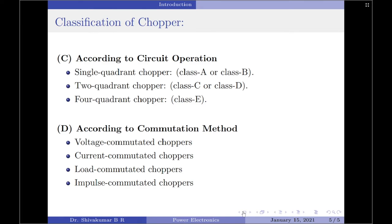The second is the 2 quadrant chopper, in which the output voltage is positive and the current can be either positive or negative, which creates the class C chopper, or the output current is positive and the voltage can be positive or negative, which in fact is class D chopper.